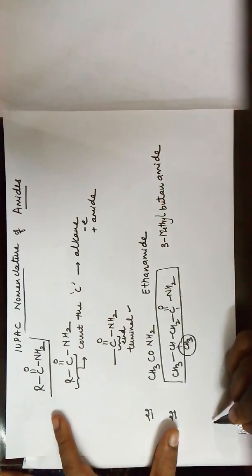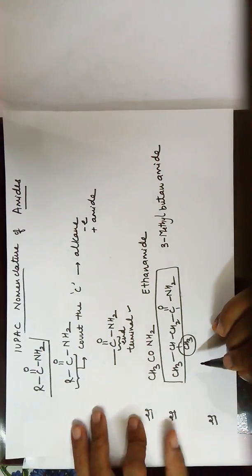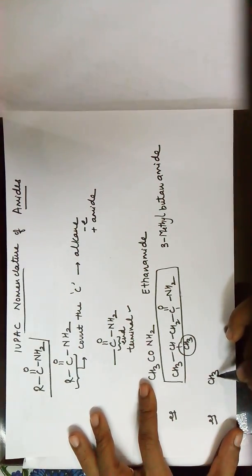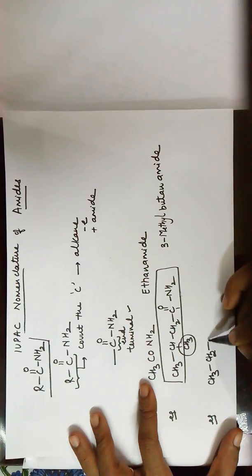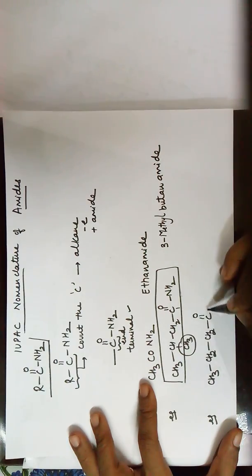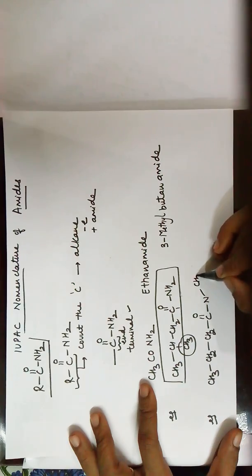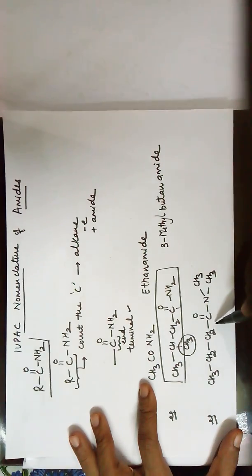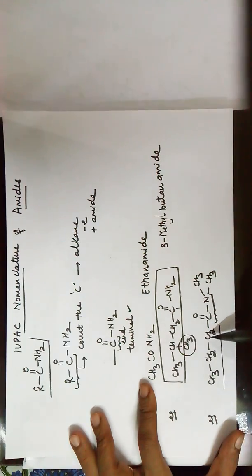Taking another example. As soon as you come across a C double bond O bonded to an N, it automatically becomes an amide. Looking at the carbon chain attached towards the CO group (the parent chain), the total number of carbons here are one, two, three, and four. So it becomes a butanamide.